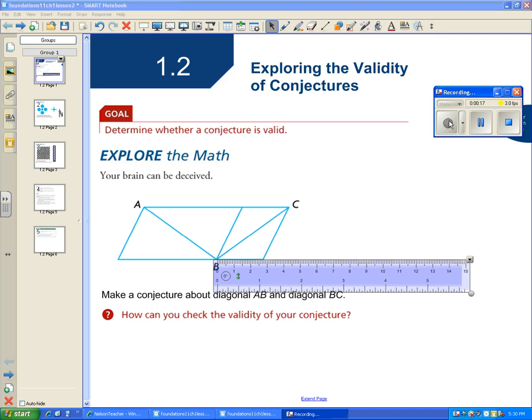What we're looking at right now is we're actually looking at some conjectures and we're going to decide if they are valid, if we believe them or not. So first of all, we're going to look at this figure right here. What we want to know is we want to make a conjecture about the diagonal AB, so this length here, and the diagonal BC.